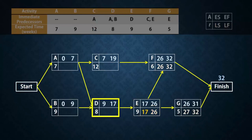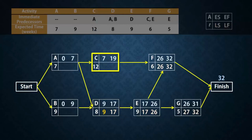D has only one successor, E. So the latest finish time for D will be the latest start time for E, which is 17. And the latest start time will be 17 minus 8, which gives 9 for D. Activity C has one successor, F. Therefore, the latest finish will be 26 for C, and latest start will be 14.